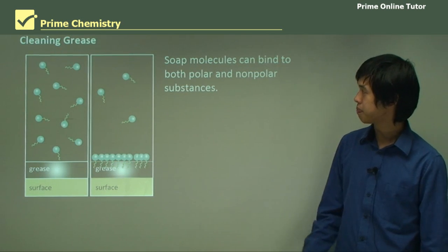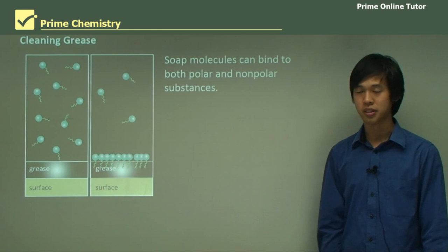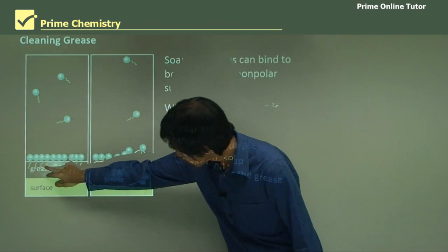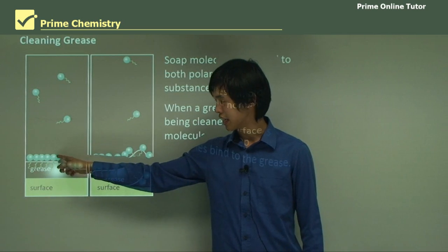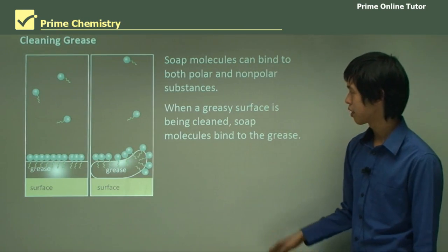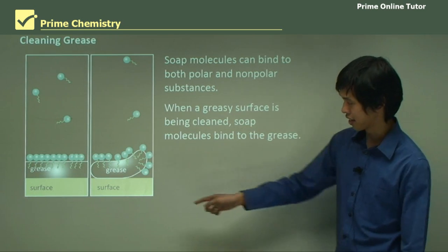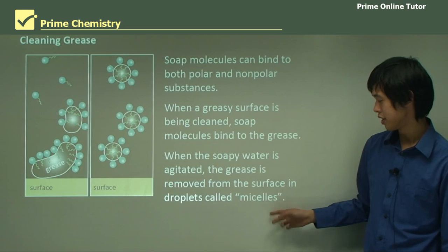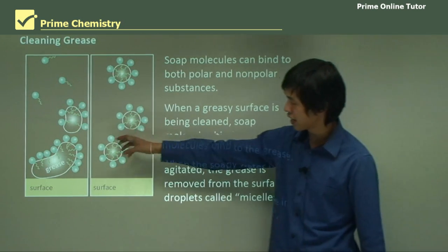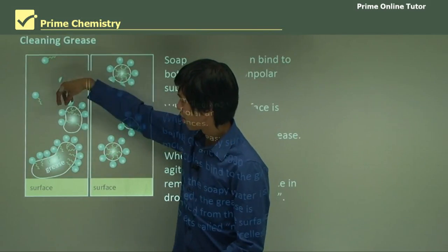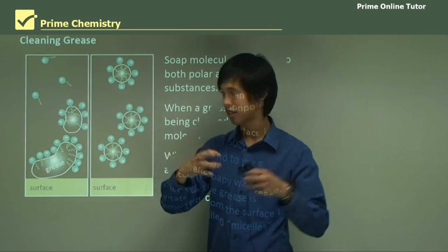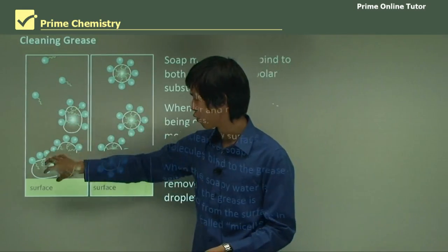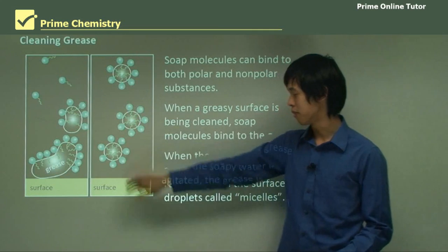Cleaning the grease. Soap molecules can bind to both polar and non-polar substances. You can see here that the soap has now bonded to the grease, and the negatively charged head is exposed to the water. When a greasy surface is being cleaned, soap molecules bind to the grease. The little tails are stuck in the grease. When the soapy water is agitated, the grease is removed from the surface in droplets called micelles. As we shake the water up, we can pull on these negatively charged heads because the water is moving. That pull on the heads also pulls the tails, and those tails pull the grease away as well. They form little droplets.